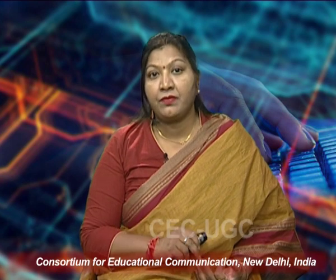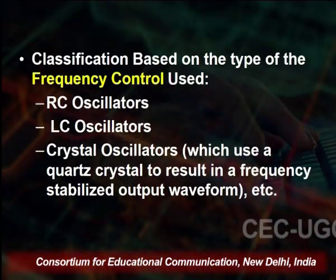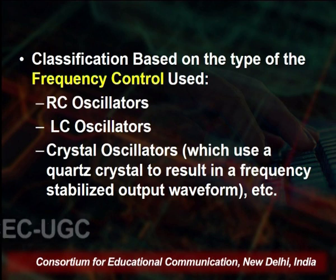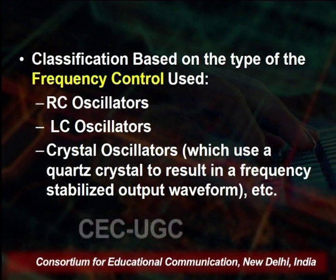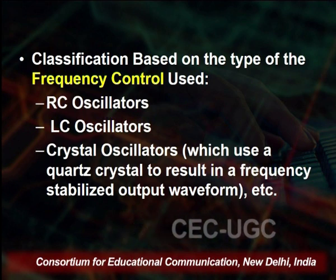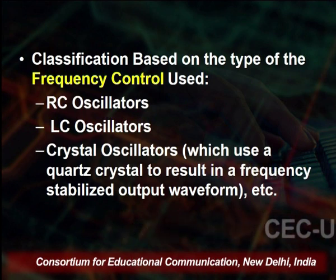We will now discuss in detail three types of oscillators classified on the basis of frequency control: number one, the RC oscillator; number two, the LC oscillator; and number three, the crystal oscillator.